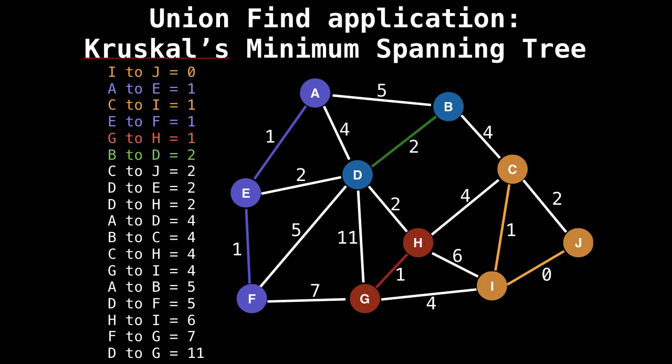Next, we have D to B. They also don't belong to a group, so give them their own group, let's say group green. And now I believe this is when things start to get interesting.